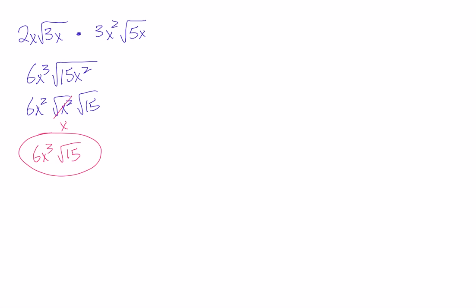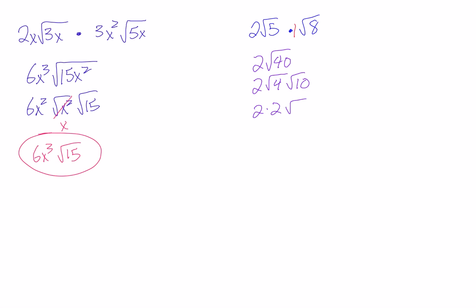Another thing to be aware of is what happens if there are numbers missing. If I have 2 root 5 times root 8, there's no number in front of root 8. Remember, in any case like that, just think of it as being a 1. So we'd have 2 times 1, which is 2. Then 5 times 8 is 40. We can break 40 into 4 and 10, and root 4 becomes 2. So 2 times 2 gives us 4 root 10.